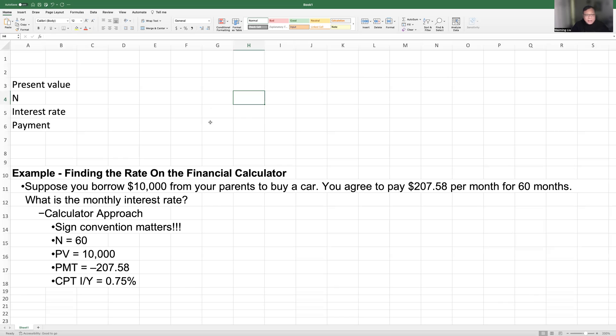In this example, we want to use one way you can do it is to use your financial calculator. So suppose you borrowed $10,000 from your parents to buy a car. That means now you borrow the money, so present value. You receive the money from your parents. Let's say this is a positive. You receive the money. Present value is $10,000.